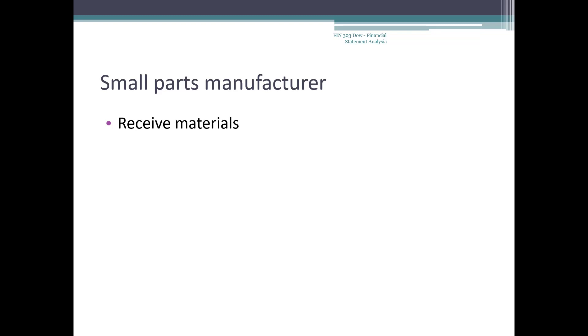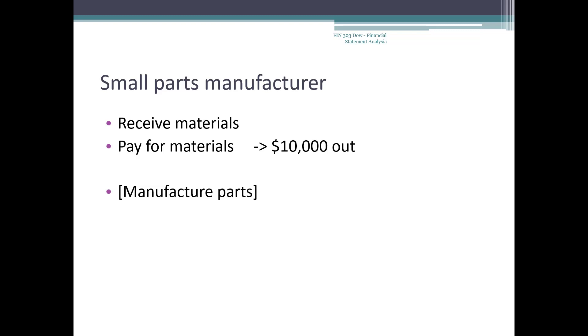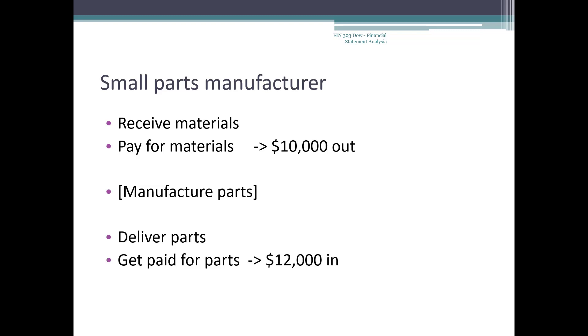Here is a simple example of the timing for a small parts manufacturer. Initially, they receive the materials they use. Then they pay their supplier $10,000 for the materials. They manufacture the parts and then deliver them to the customers. Finally, the customers pay the company $12,000 for the parts. For an established firm, once they get paid, they can use the proceeds from the sale to finance future materials purchases, but for startup firms, they will need to obtain working capital at the start.